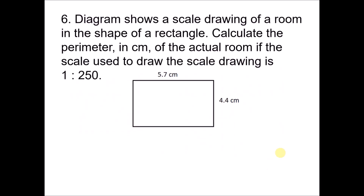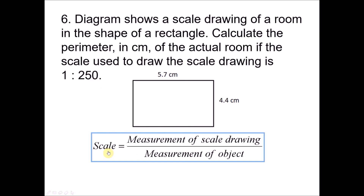Now for the problem-solving question: the diagram shows a scale drawing of a rectangular room. Calculate the perimeter of the actual room using the scale 1 to 250. Method 1 (by understanding): every 1 cm of the scale drawing represents 250 cm of the actual length. So 5.7 cm represents 250 × 5.7, and 4.4 cm represents 250 × 4.4. Method 2 uses the formula: scale = measurement of scale drawing / measurement of object.